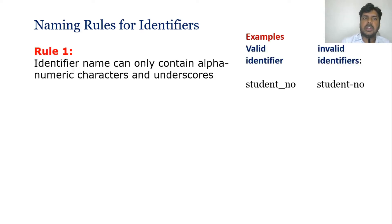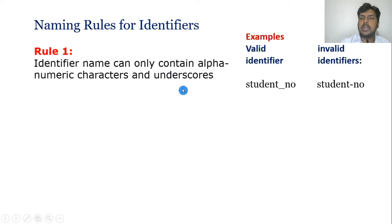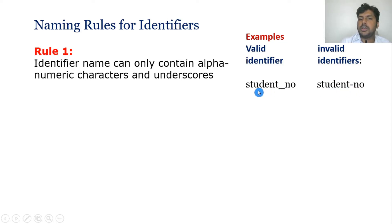Rule one: the name can only contain alphanumeric characters and underscore. What do you mean by alphanumeric? A to Z and 0 to 9 — alphabets and numerics. So alphanumerics and underscore. For example, you can see here — the first example is a valid one. The second one is invalid because instead of underscore, a special character was used. So you should use only letters, numbers, and underscore.